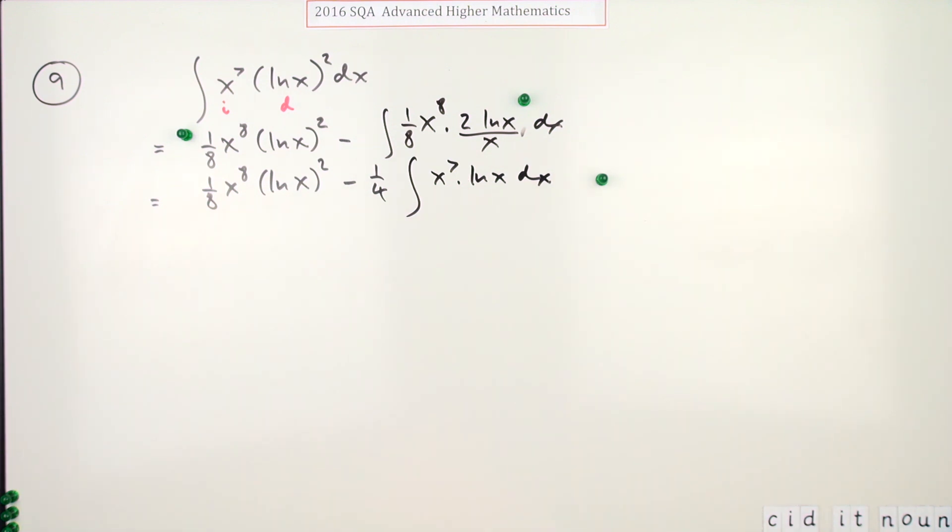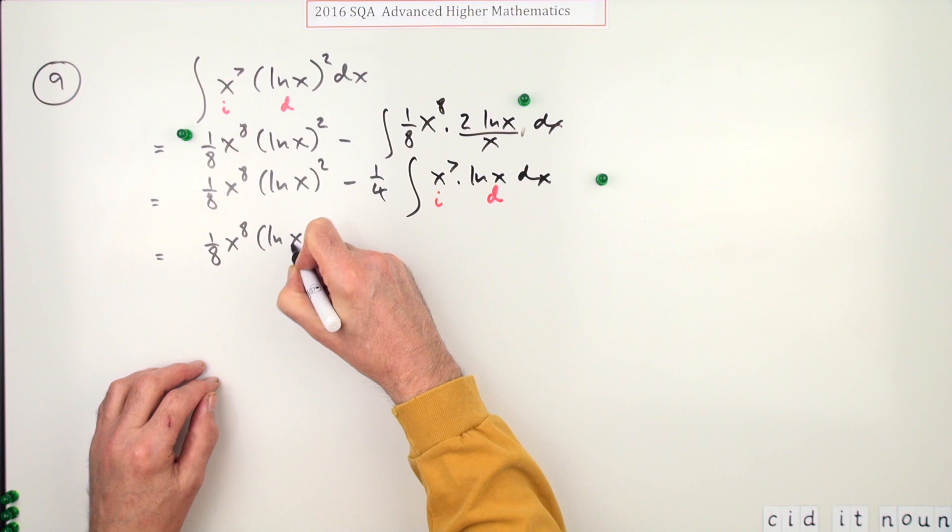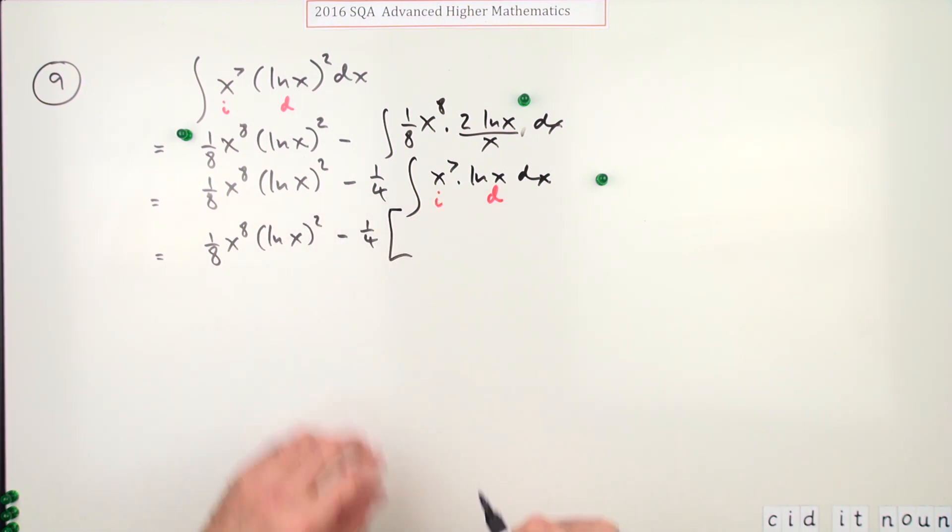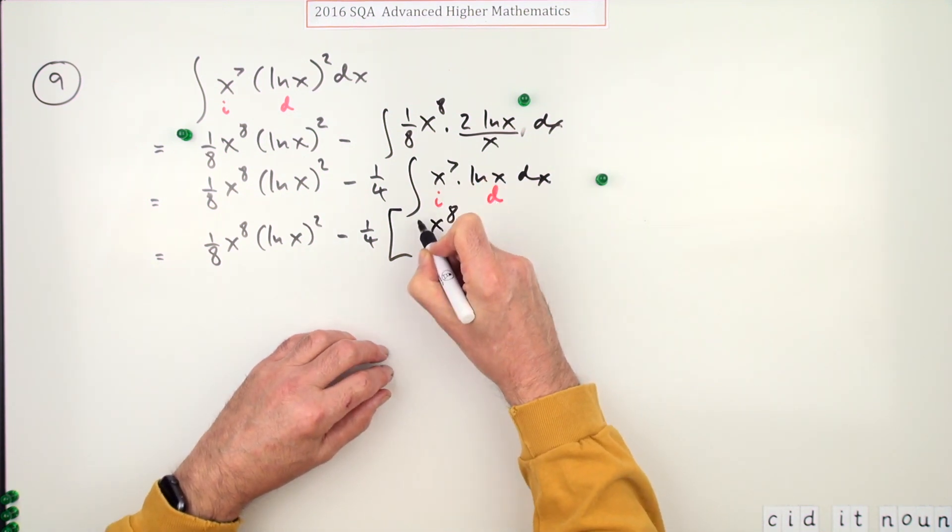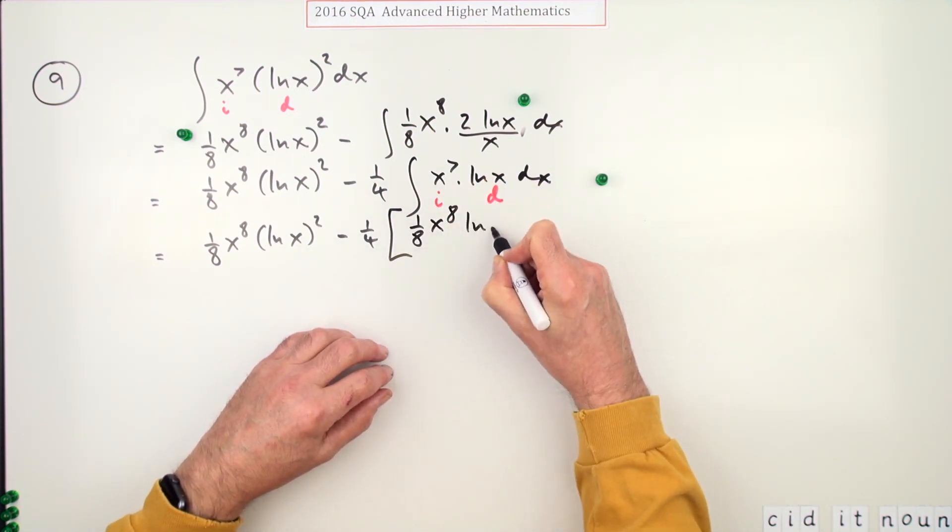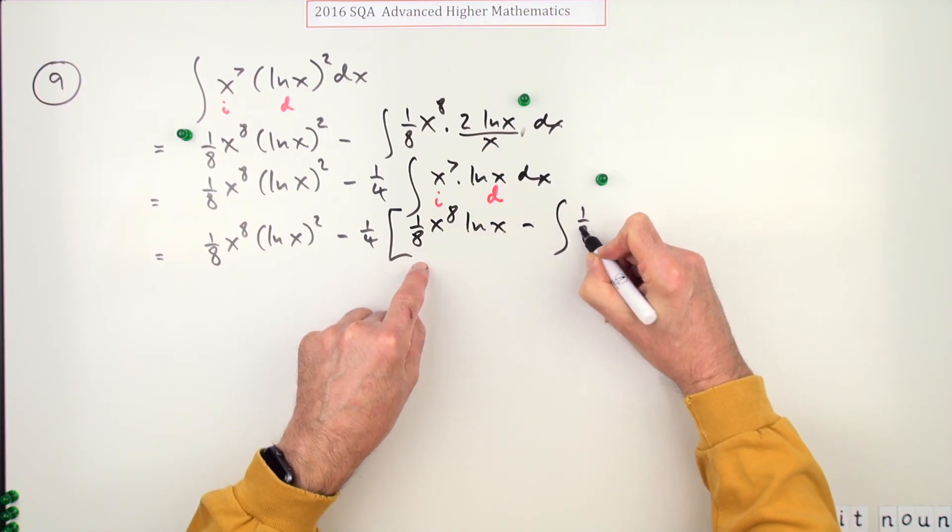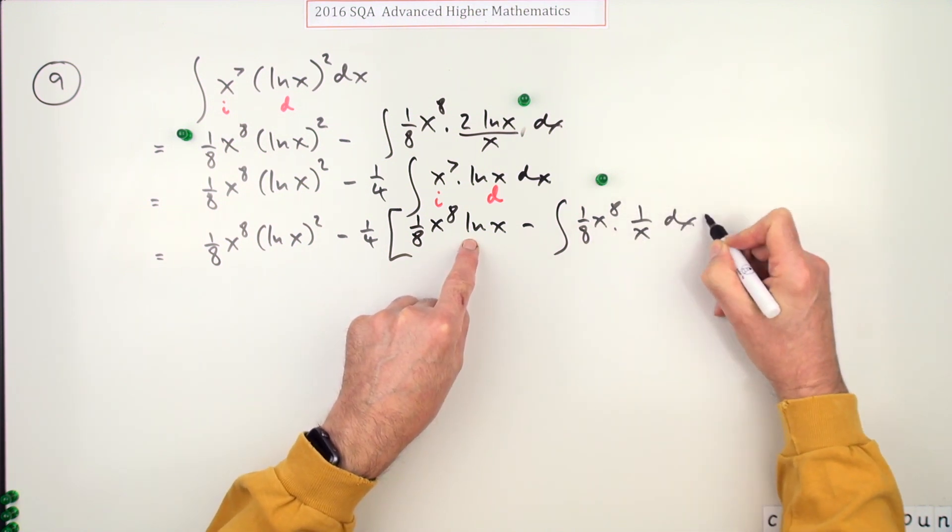Now you've got to start again. So integrate, differentiate. So it's going to be this again, then a quarter of, and then just go through the process again. So it'll be up to eight, divide by eight, and leave it alone, and then carry it forward. Now differentiate that, which just becomes one over x dx.